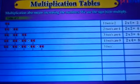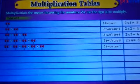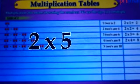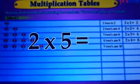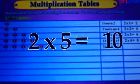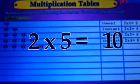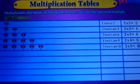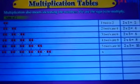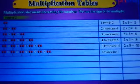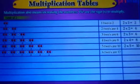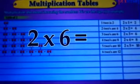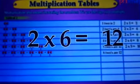Five twos are ten. Two into five equals to ten. Six twos are twelve. Two into six equals to twelve.